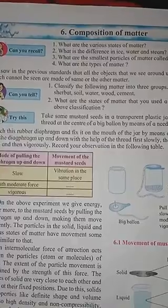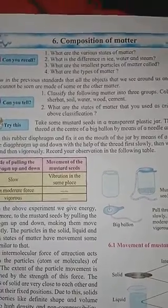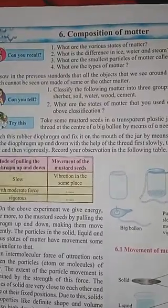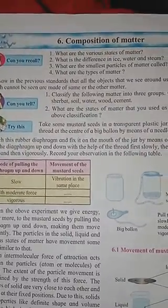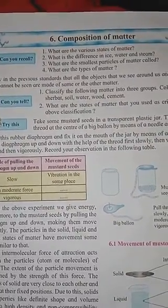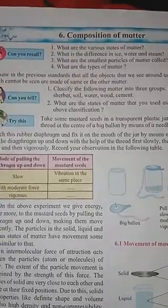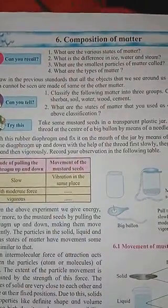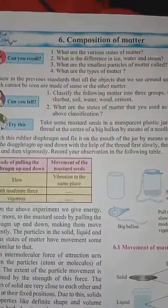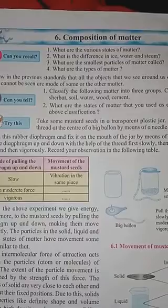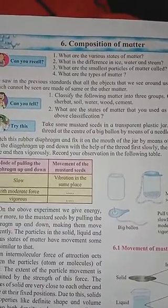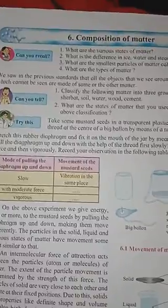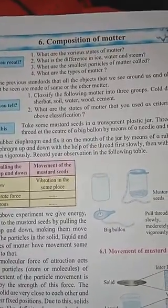What are the smallest particles of matter called? The smallest particle of matter is called an atom. When small atoms come together, that is known as a molecule. The types of matter are element, compound, and mixture, which we are going to see one by one.